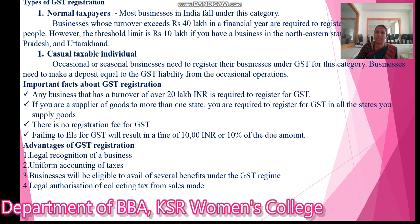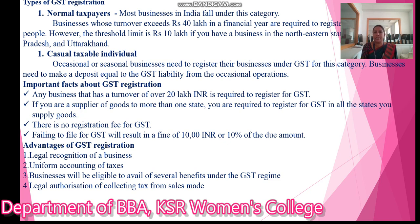The second type is casual taxable individual. Occasional or seasonal businesses need to register under GST in this category. Such businesses need to make a deposit equal to their estimated GST liability from the occasional operations.